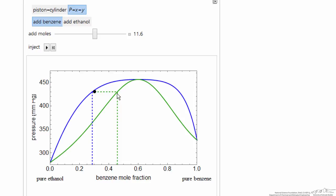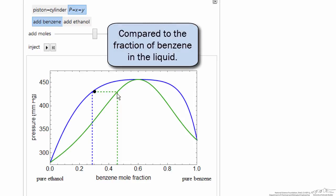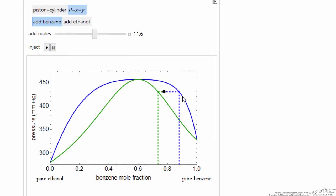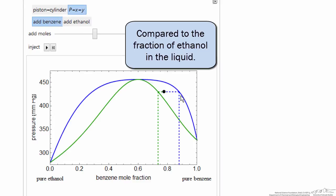And we see the vapor is enriched in benzene, and when I hit play, I actually go into the two phase region where now we're enriched in ethanol in the vapor phase.